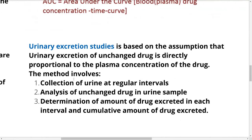Urinary excretion studies are based on the assumption that urinary excretion of unchanged drug is directly proportional to the plasma concentration of the drug. This method involves collection of urine at regular intervals, analysis of unchanged drug in the urine sample, determination of the amount of drug excreted in each interval, and the cumulative amount of drug excreted in totality.